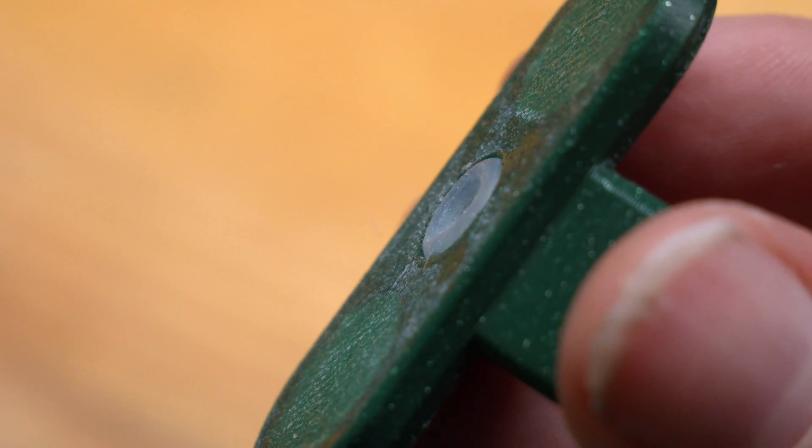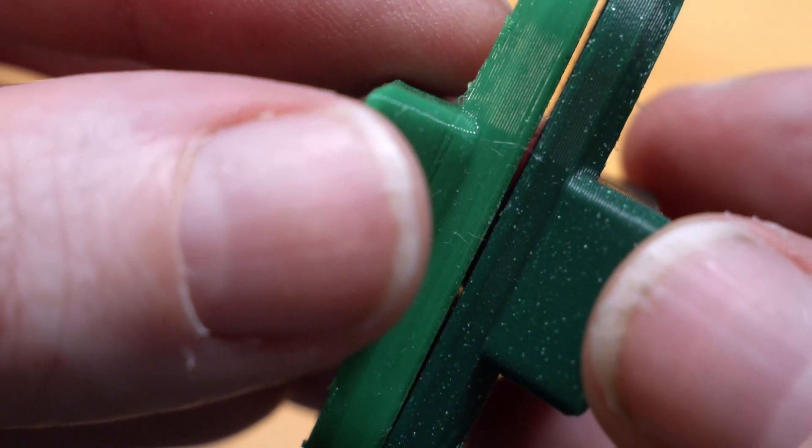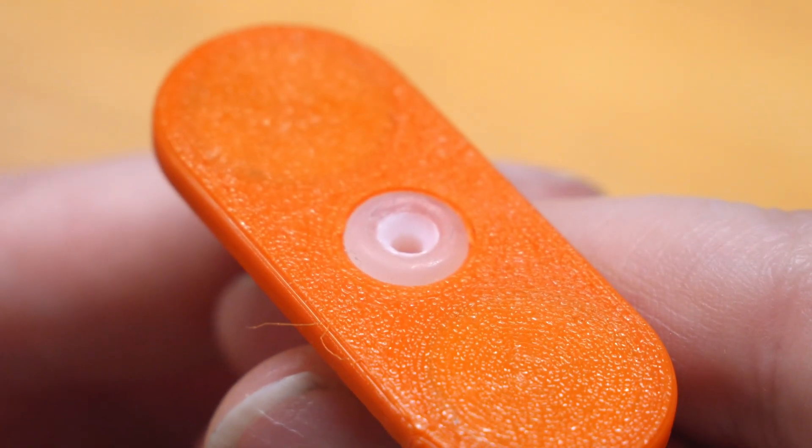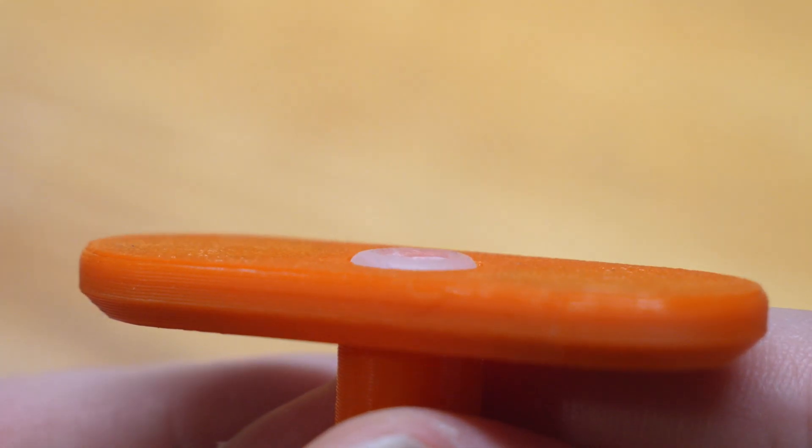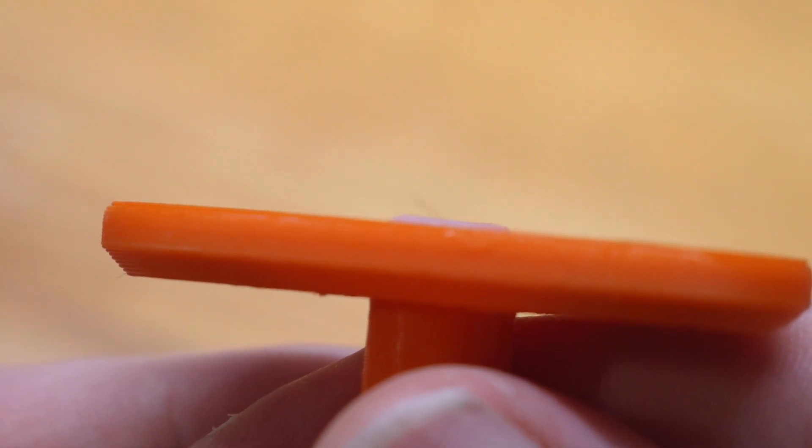They'll stick out from the surface slightly, so the pressure from the magnetic connection will focus on these. With the PTFE tube glued directly to the inside of the o-ring, we get an airtight seal between the tubes regardless of how porous the 3D print comes out.